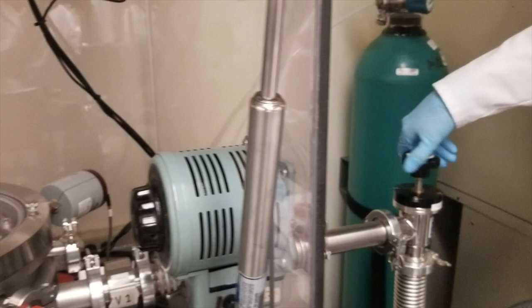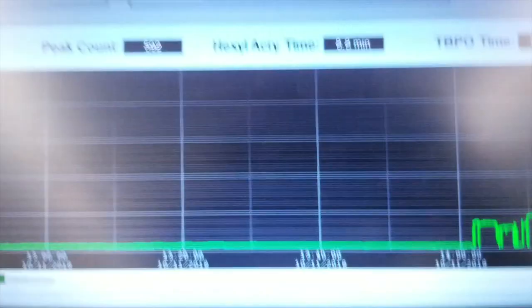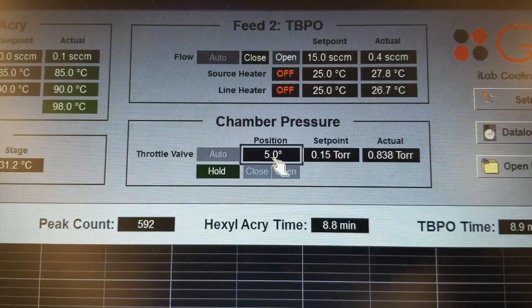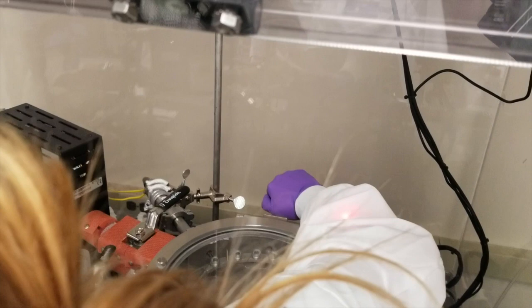We then open up valve 2 fully and wait for the pressure to drop below 1000 millitorr and then open valve 1 through the computer. Afterwards we open up the nitrogen gas valve as little as possible while trying to achieve a stable chamber pressure of 0.150 torr.